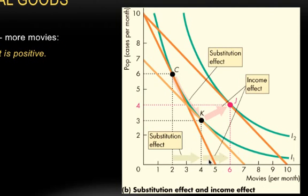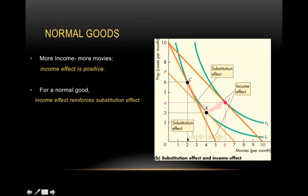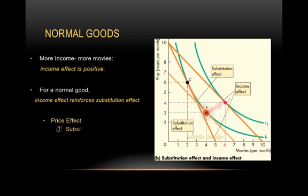In the case of a normal good, this income effect is positive. When you give Maya back the income, she ends up consuming more movies — from 4 to 6 — and more pop as well, from 3 to 4. So the move from K to point J is purely due to the increase in income that resulted from the price fall. In the case of a normal good, the substitution effect is reinforced by the income effect. The price effect, which is the move from C to J, equals C to K plus K to J.